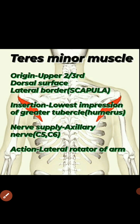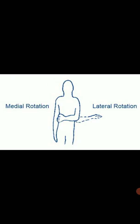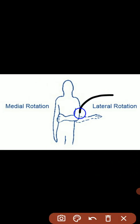The third muscle is teres minor muscle. As you can see in the image, its origin is from upper two-thirds of the dorsal surface of the lateral border of scapula. Insertion: lowest impression of greater tubercle of humerus. Nerve supply: axillary nerve C5-C6. Action: lateral rotator of arm.